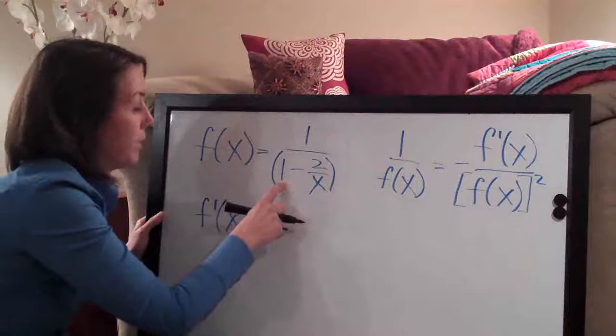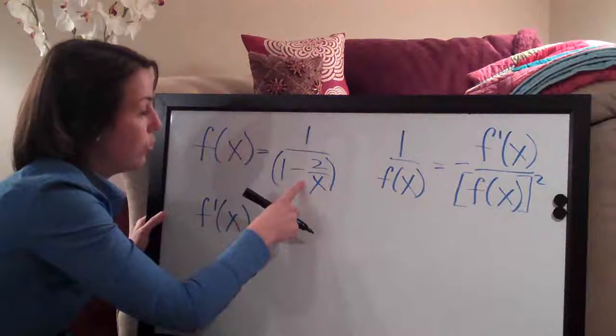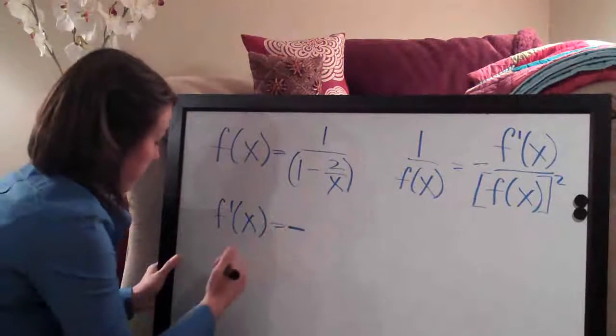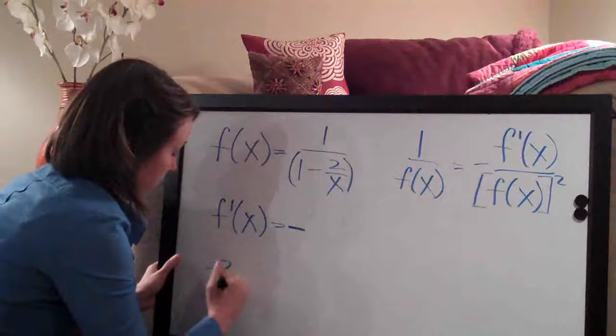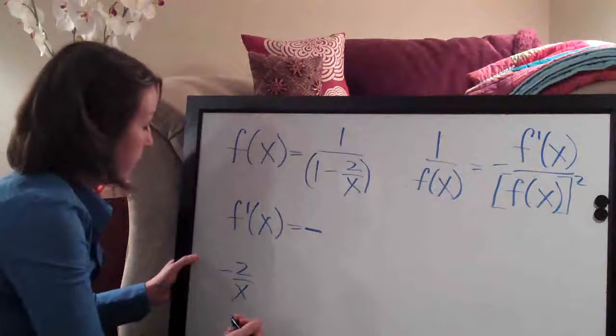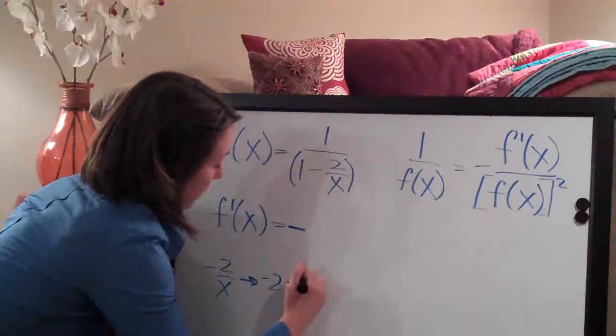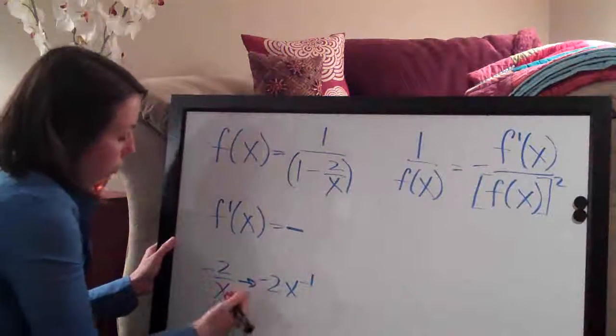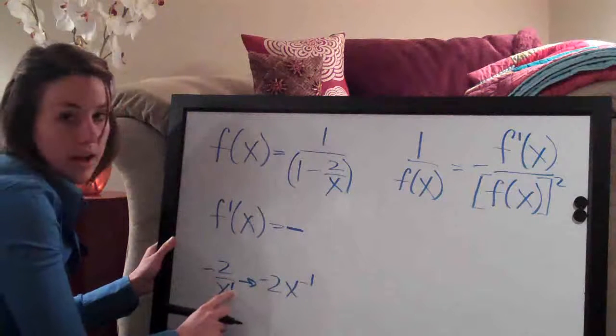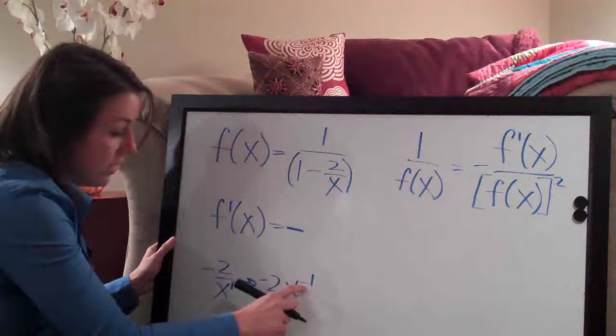So the derivative of 1 is 0 because 1 is a constant. And then the derivative of 2 over x, we can actually change this to be 2 over x. I'm going to go ahead and move the x to the top and the way that I'm going to do that, I'll say negative 2x to the negative 1. This x has an implied 1 as an exponent on it. I move it to the numerator by changing the sign from a positive to a negative on the exponent. So the sign changes to a negative 1 when I move it to the top.